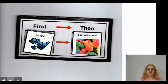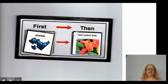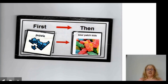Let's look at an example. This is the first-then board that I've made up, and I'm actually going to show how it works with Jacob. First I'm going to ask him to do a puzzle, and then I'm going to give him a sour patch kid candy.